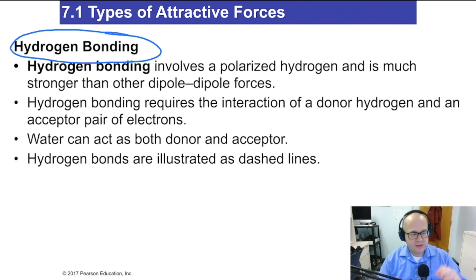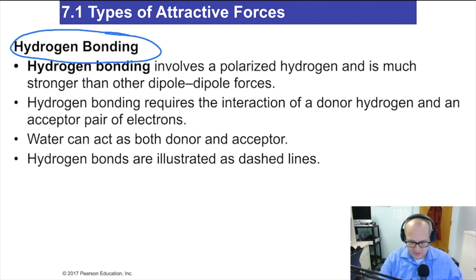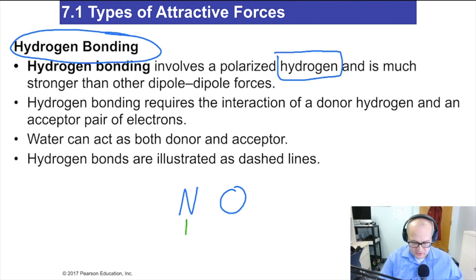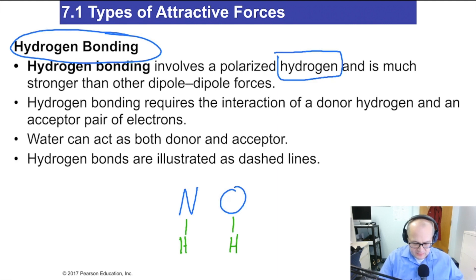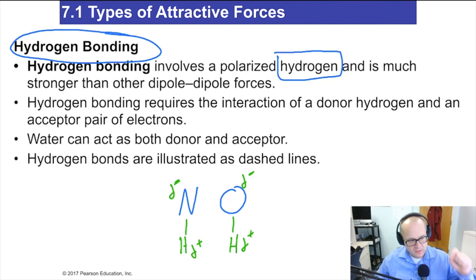A dipole-dipole attraction involves a permanent delta positive and a permanent delta negative attracted to each other. Hydrogen bonding is very specific in that it involves a hydrogen attached to a nitrogen or an oxygen — in other words, NH or OH. Sometimes fluorine is mentioned, but for this class, hydrogen bonding means NH or OH. The nitrogens will be delta negative, the oxygens are delta negative, and the hydrogens will be delta positive. These are permanent dipoles; they always exist.